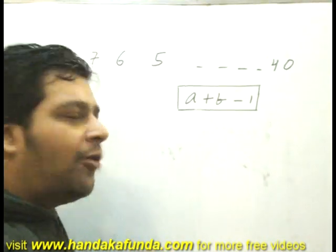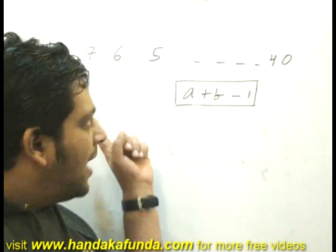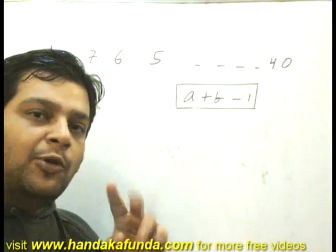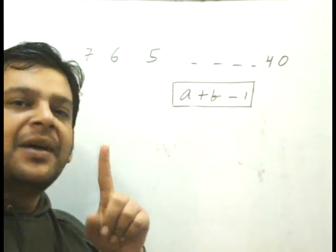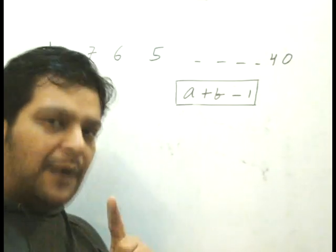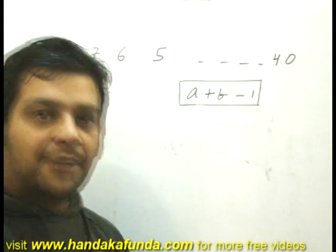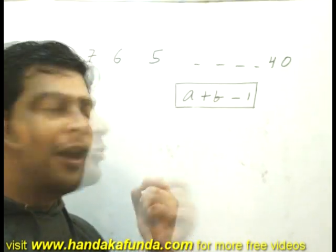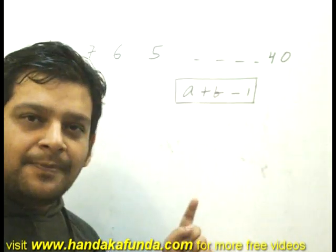Think about it. How many operations will you have to do? I have 40 numbers. In every operation, I am losing out on one number because two numbers are becoming 1. In the end, I should be left with one number. That means I have to eliminate 39 numbers. So I need to do 39 such operations.